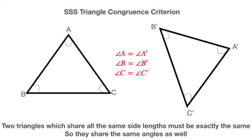The SSS criterion says that if two triangles share exactly three same side lengths, then they must be exactly the same, and so must share the same angles.